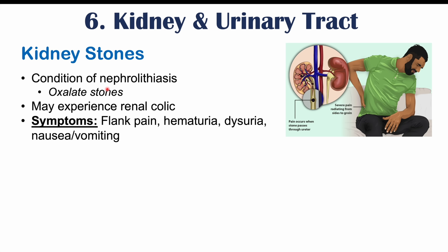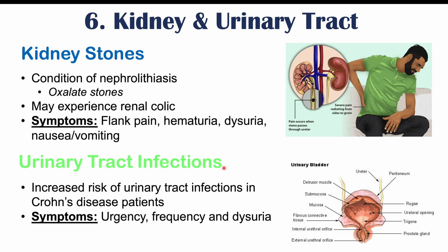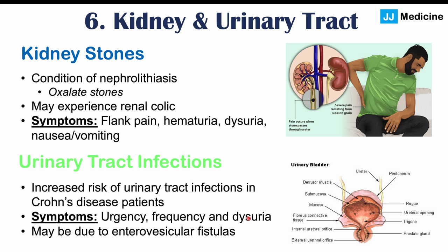Crohn's disease patients are also at increased risk of urinary tract infections, with symptoms including urgency, frequency, and dysuria. Urinary tract infections may be due to enterovesicular fistulas — tunnels that can form from a chronically inflamed bowel, such as the ileum, to the bladder — allowing bowel contents to enter the urinary tract.